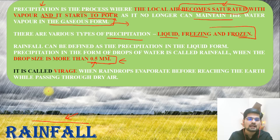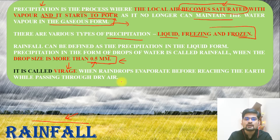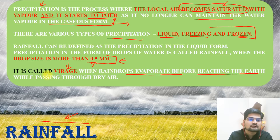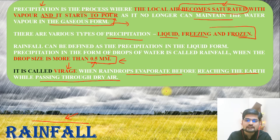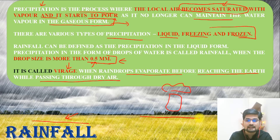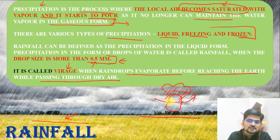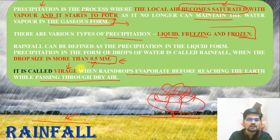When raindrops evaporate before reaching the earth while passing through dry air, it is called virga. For example, if there is a cloud above and a dry air layer in between, raindrops from the cloud may disappear or evaporate just before reaching the ground — that phenomenon is called virga.